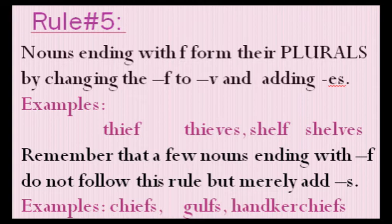Rule Number Five: nouns ending with F form their plurals by changing F to V and adding ES. So the F at the end is removed, we write V in its place, and add ES. For example: thief → thieves, wife → wives, shelf → shelves, leaf → leaves.